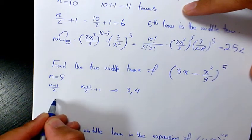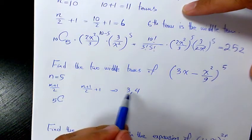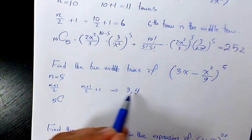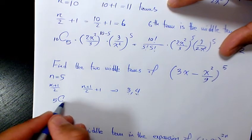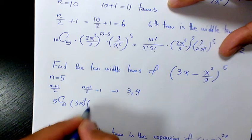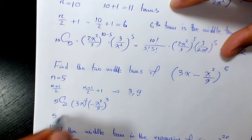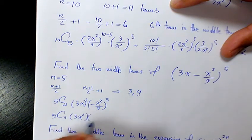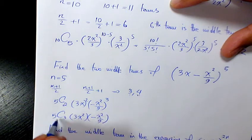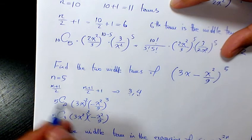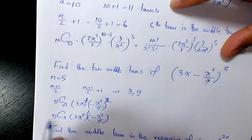The 3rd and 4th terms are the middle terms. For the 3rd term, r = 2, and for the 4th term, r = 3. So we get 5C2 times (3x) to the power of 3 times (−x²/9) to the power of 2, and the other one is 5C3 times (3x) to the power of 2 times (−x²/9) to the power of 3.